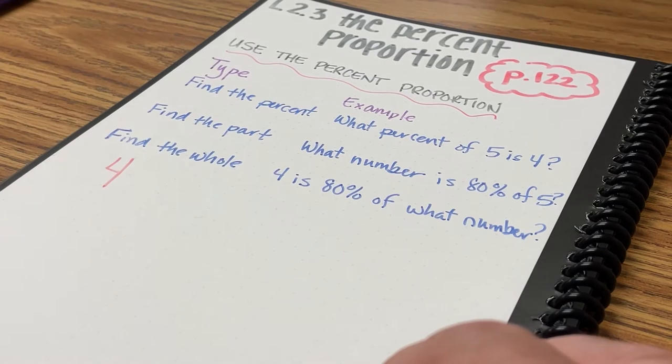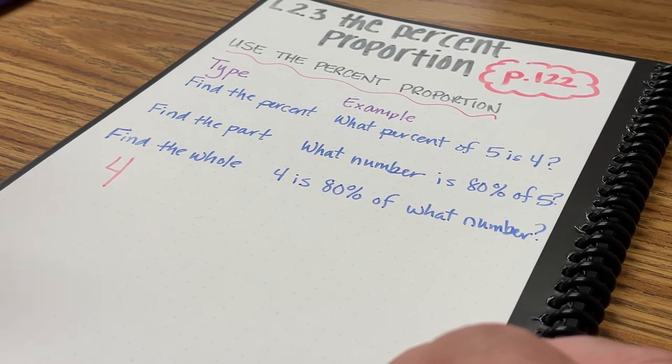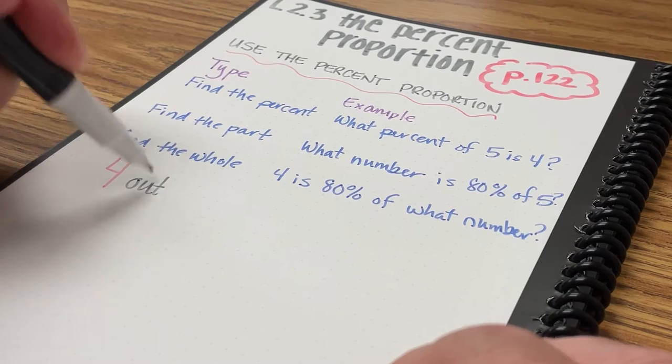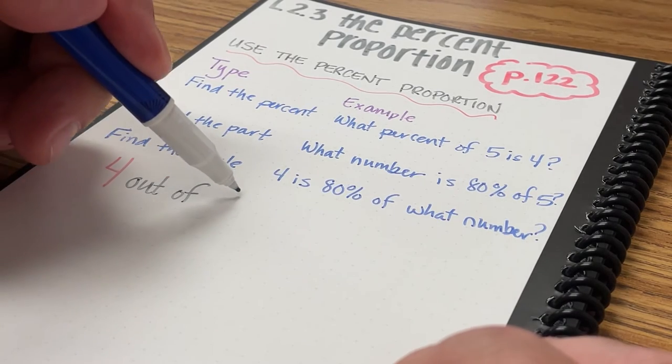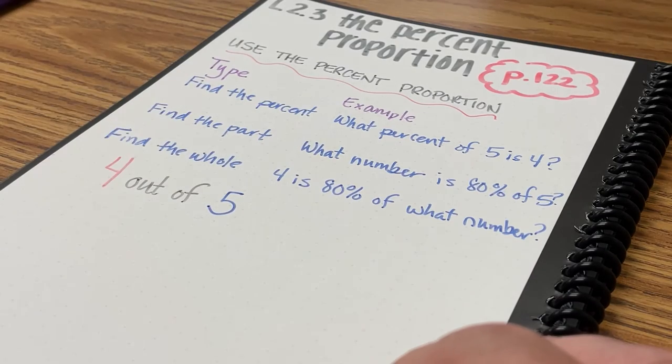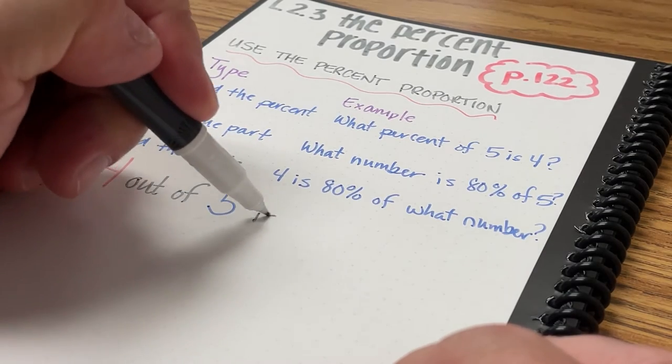So I can take some of those examples, and I can rewrite it as 4 out of 5 is 80%.